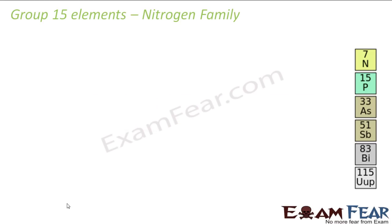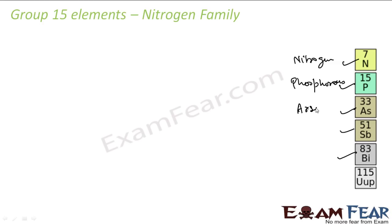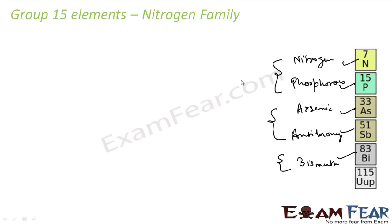In Group 15 we have my nitrogen family. These include elements like nitrogen, phosphorus, arsenic, antimony (Sb), and bismuth (Bi). These are: nitrogen, phosphorus, arsenic, antimony, and bismuth. Nitrogen and phosphorus are non-metals; arsenic and antimony are metalloids; and bismuth is a metal.